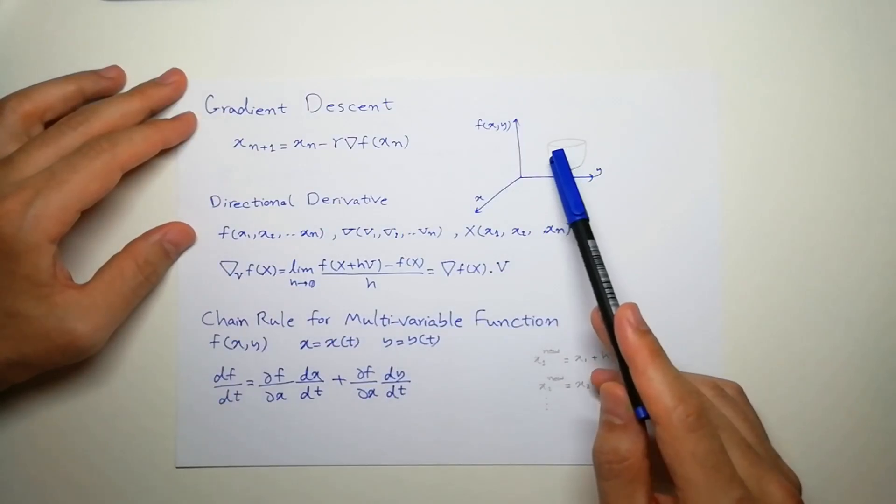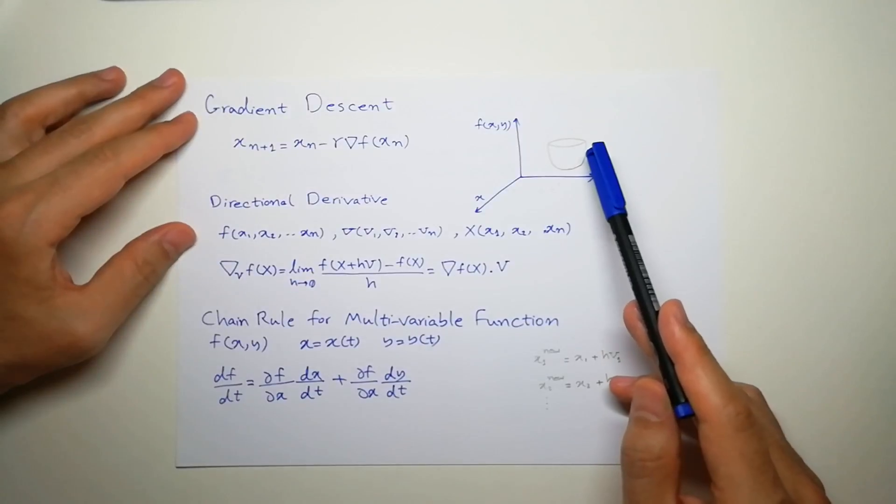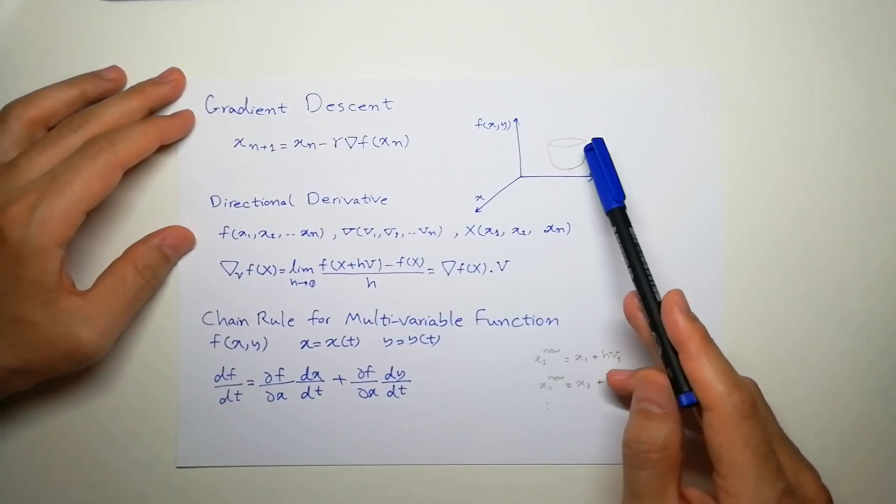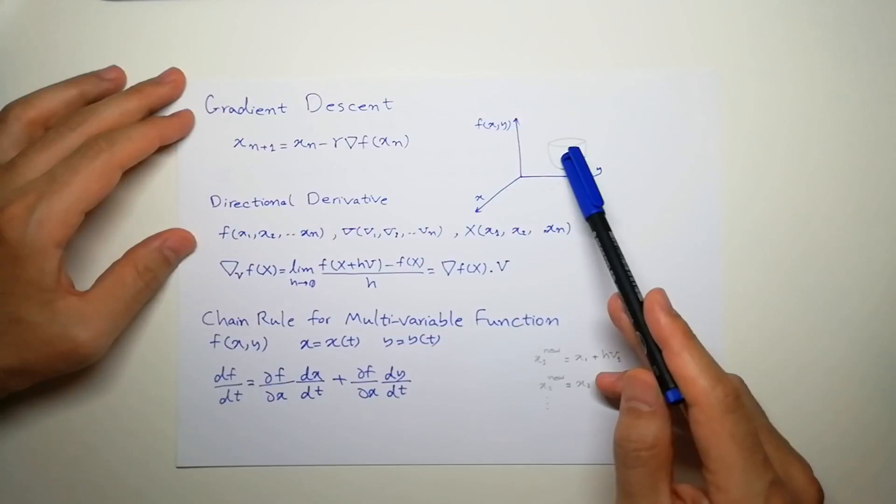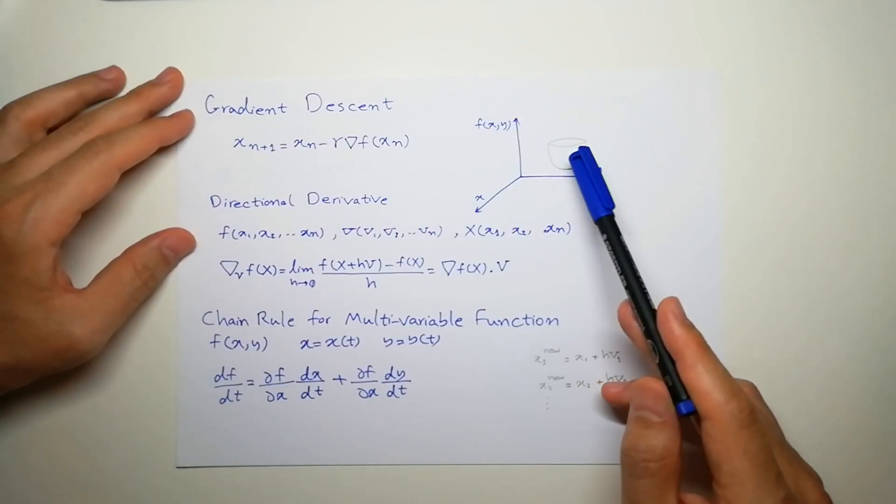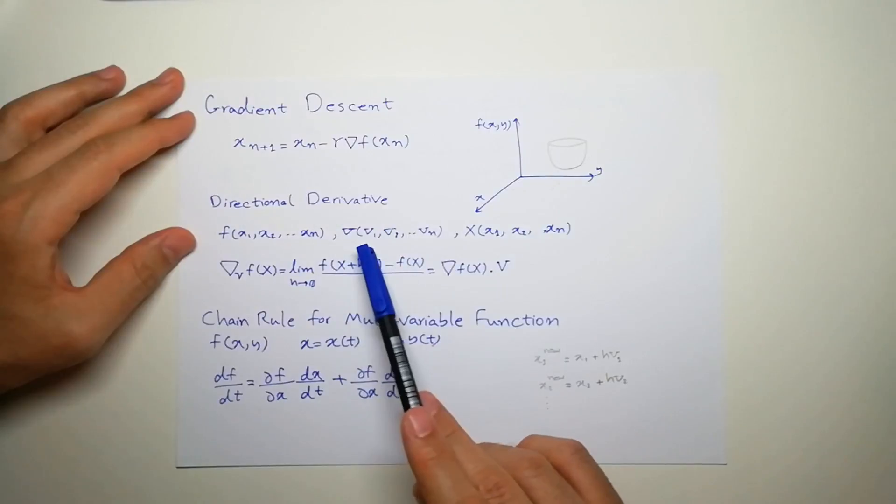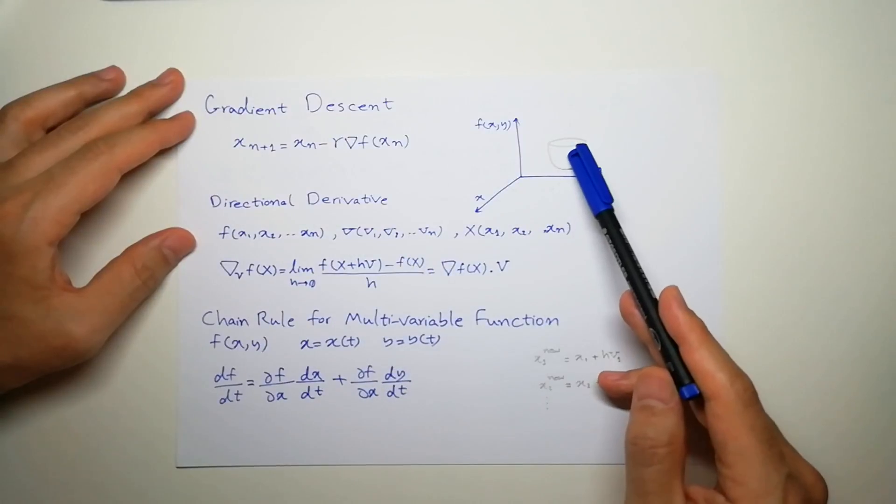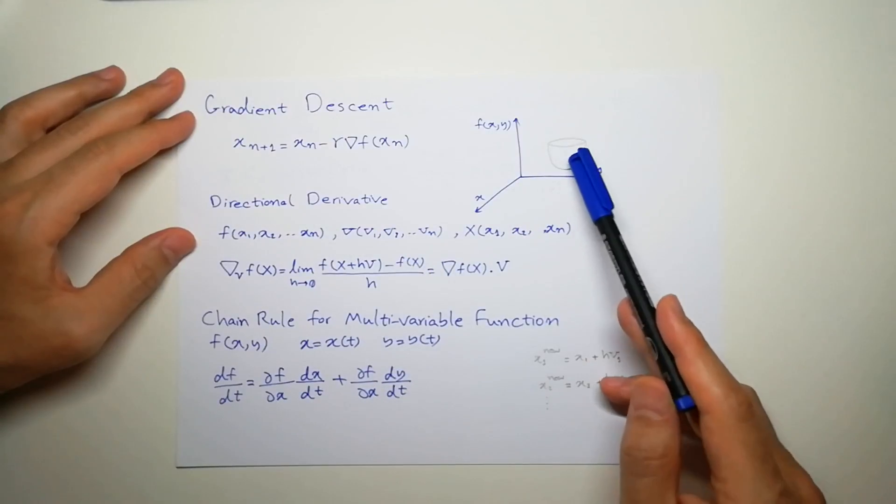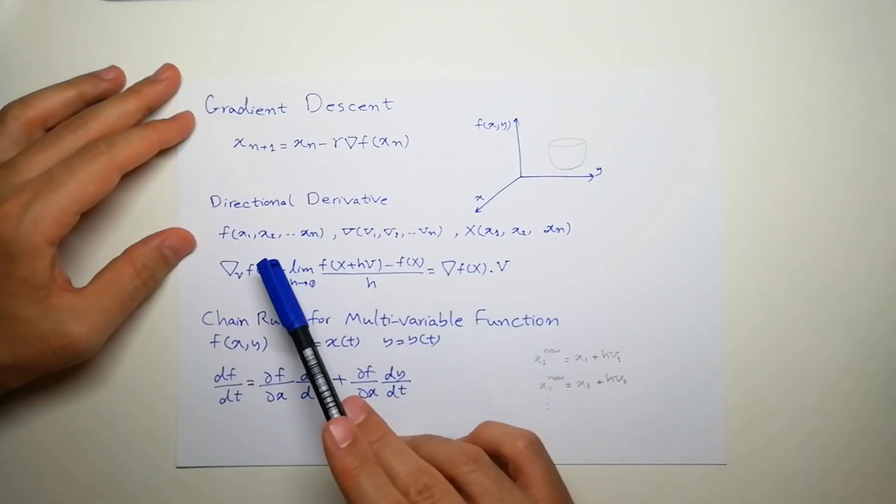Directional derivative means when you have a multidimensional function, you can compute a gradient in different directions. So you have a vector that we compute the direction on that direction, and we have a point.